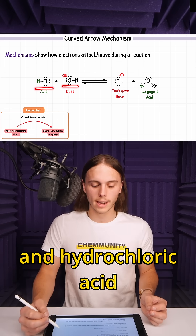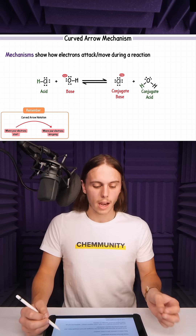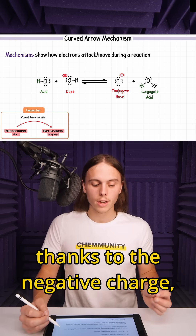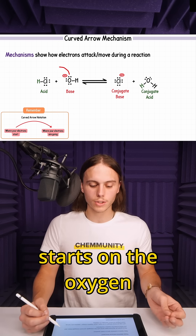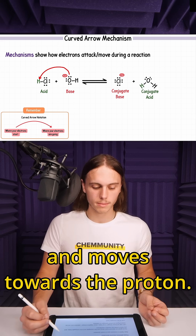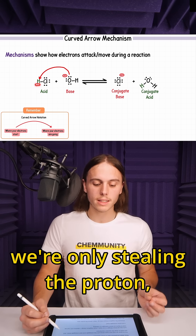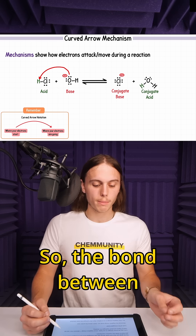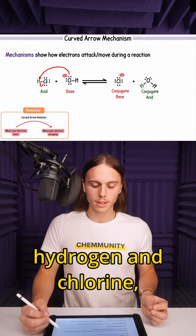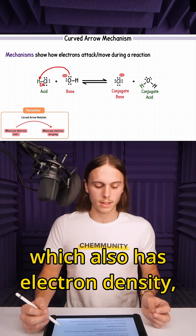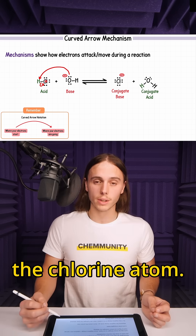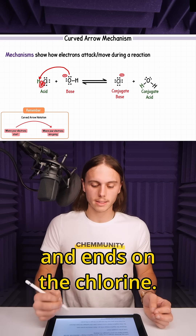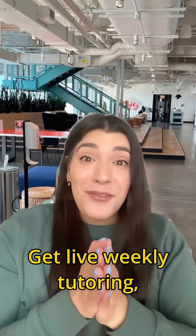Let's take hydroxide and hydrochloric acid as an example. Our hydroxide has the most electron density, thanks to the negative charge, so our first arrow starts on the oxygen and moves towards the proton. Remember, we're only stealing the proton, not the electrons attached to it. So the bond between hydrogen and chlorine, which also has electron density, breaks and falls onto the chlorine atom. That's your second arrow — it starts at the bond and ends on the chlorine.